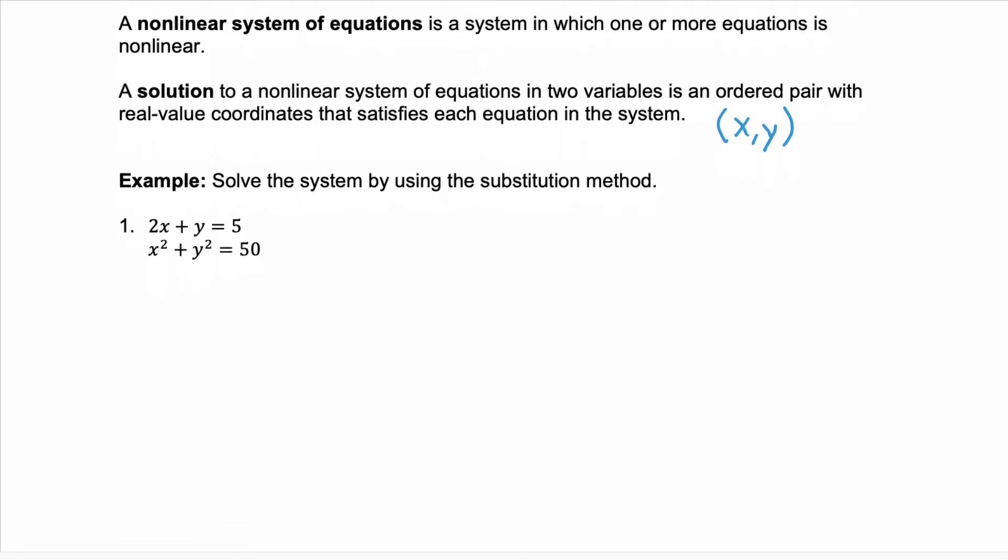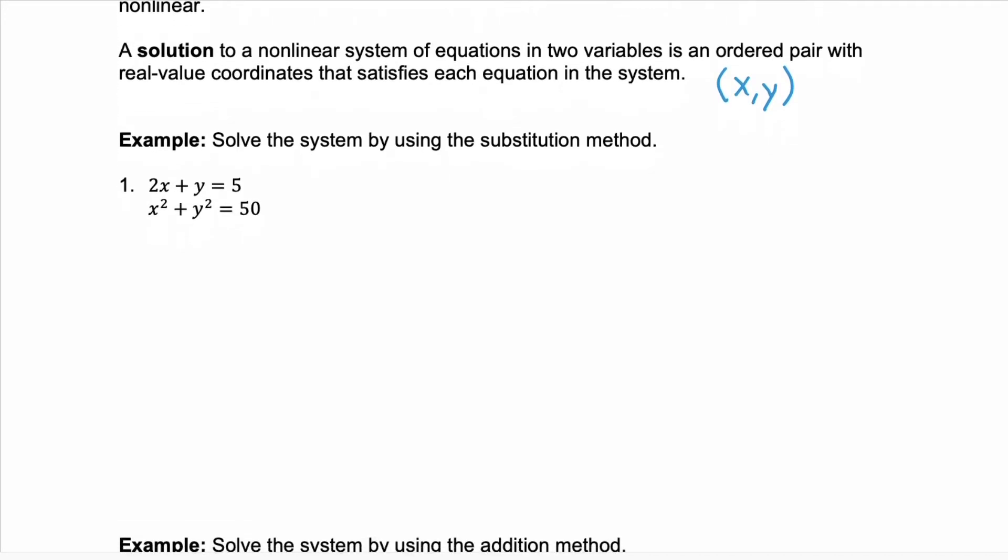In our first example, we're going to solve the system using the substitution method. Remember the substitution method has you substitute one equation into the other. To do that, one of your equations needs to be written in terms of one of the variables. Notice that our first equation can be written as y equals 5 minus 2x.